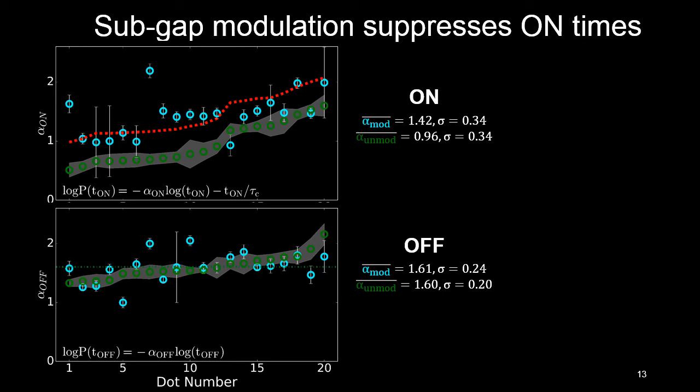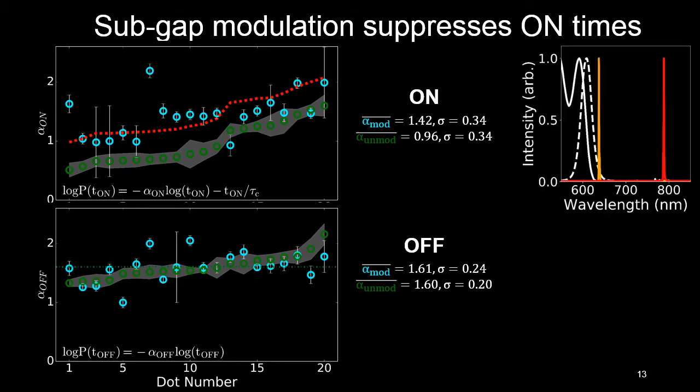Additionally, if you look at the red dashed line, it's showing you the average effect of the modulation. If you take the unmodulated slope and add that to the average slope change, you get the red line, which seems to broadly line up with the observed modulated data.